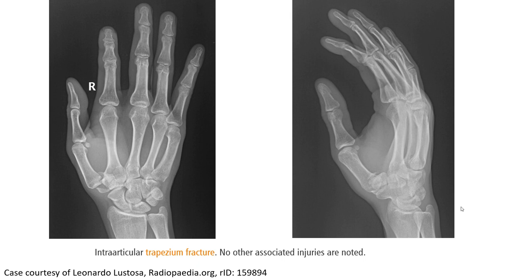This is another example of an intra-articular trapezoid fracture where no other associated injuries are noted. We can see clearly in the image on the right side a subtle fragment here.